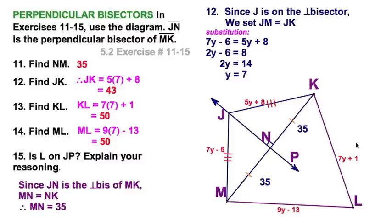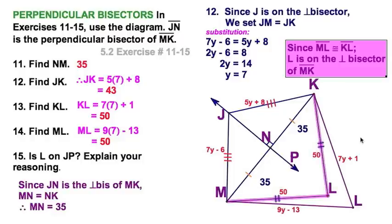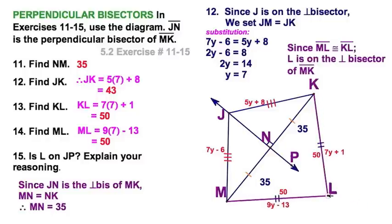And our final question. Is L on JP? So, is this on the perpendicular bisector? And all we'd have to do to answer that, let me first draw it where it really belongs to scale. Since we just solved for them, both those segments are 50. L should actually be over here. So, I'm going to move it over there. Because those two are congruent. If they're equidistant from the end points of a segment, M and K, then by our theorems, they are on the perpendicular bisector. So, it is, I would have to say, yes, they are, L is on JP.